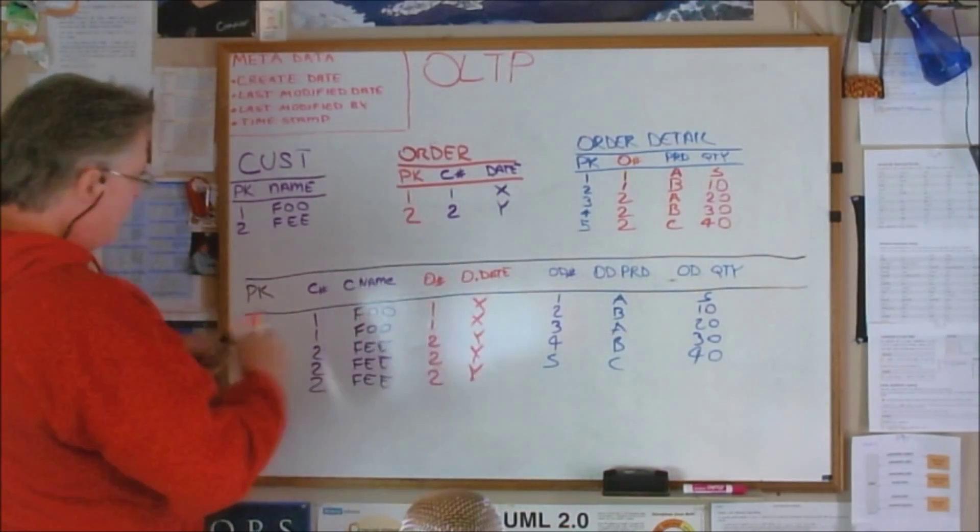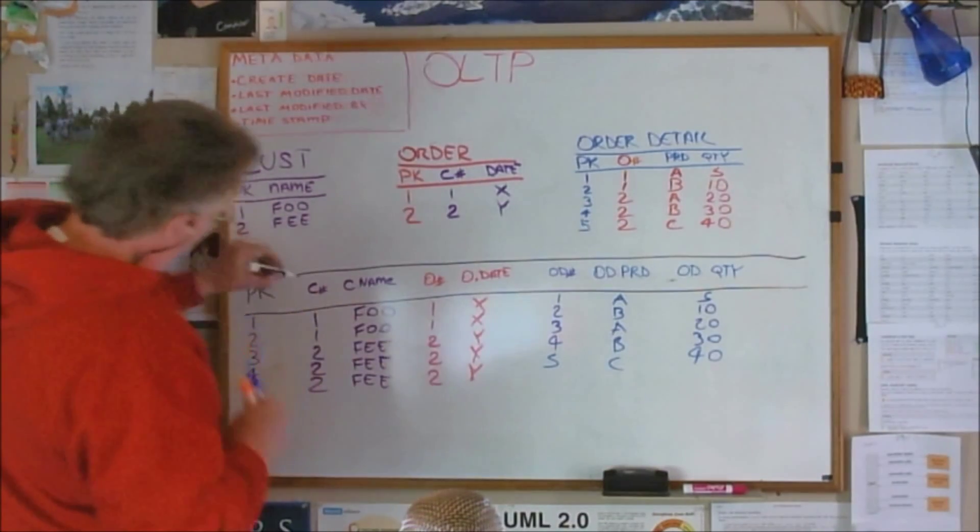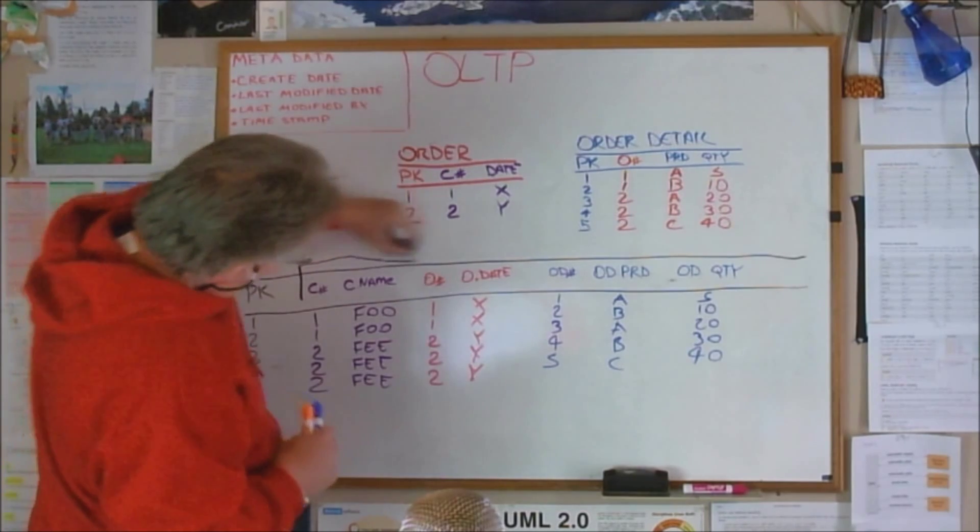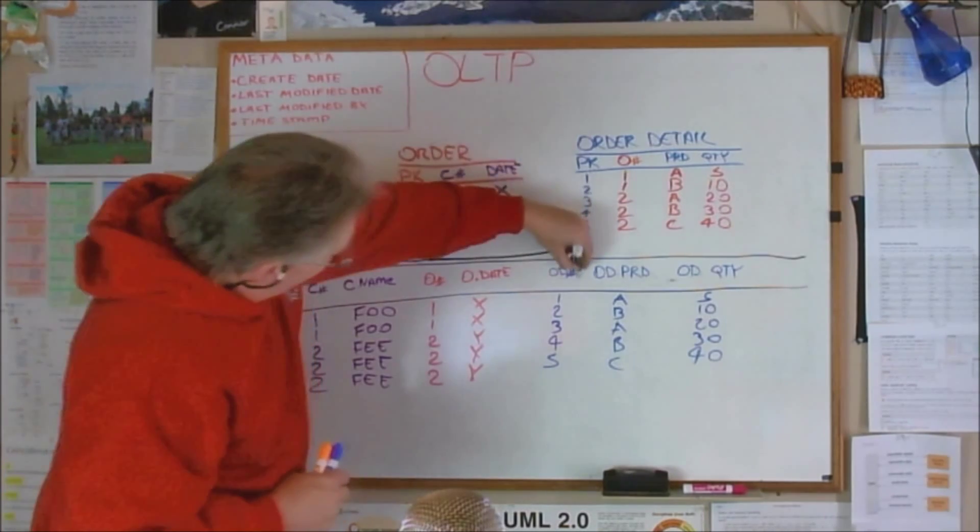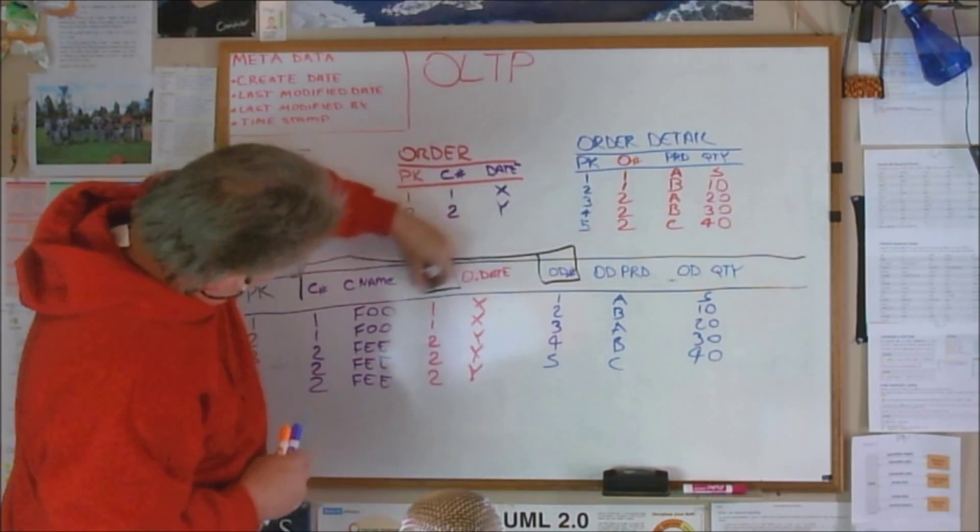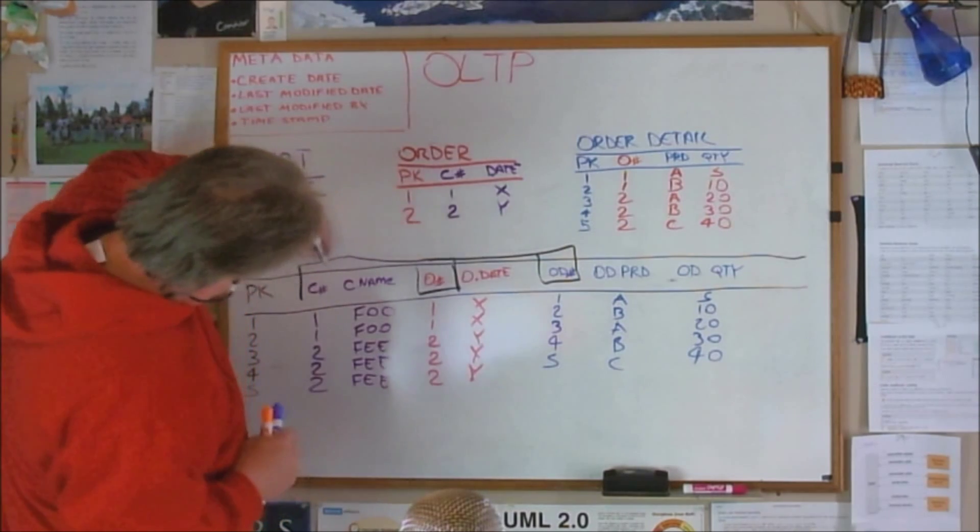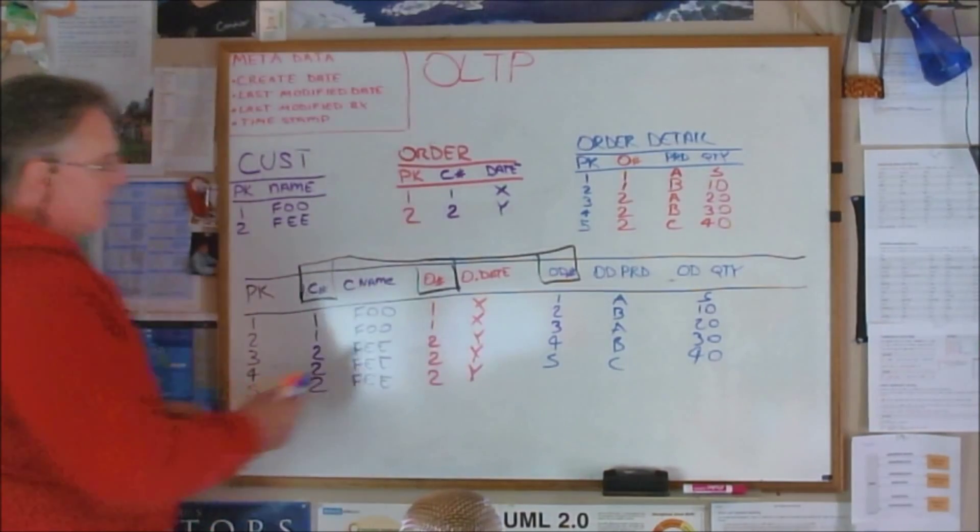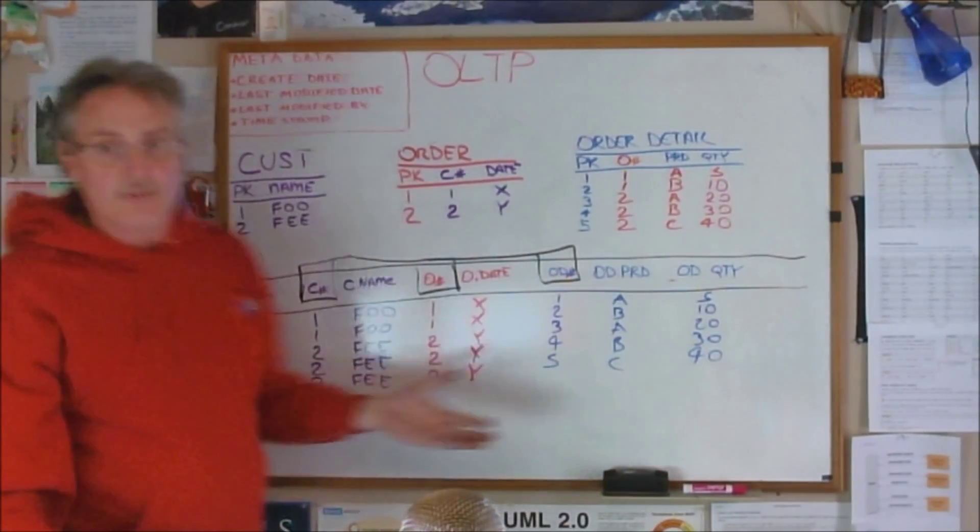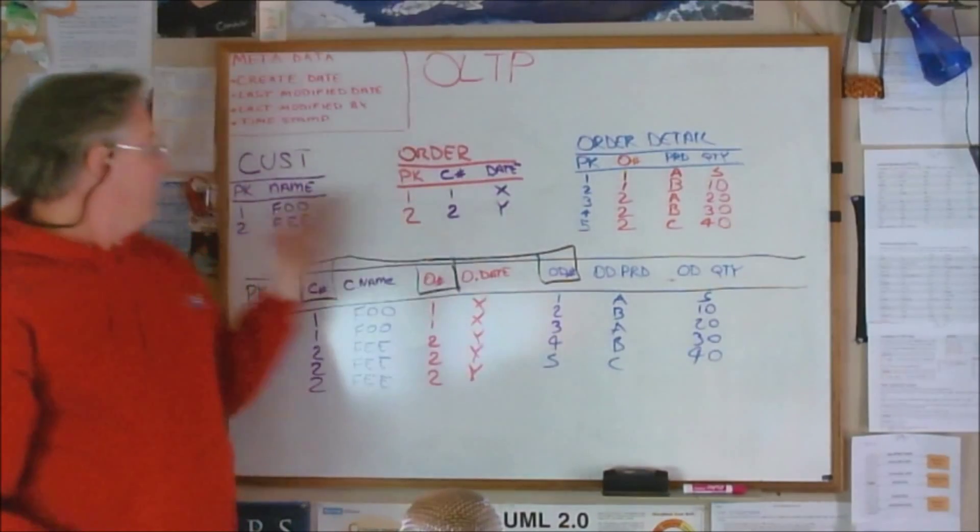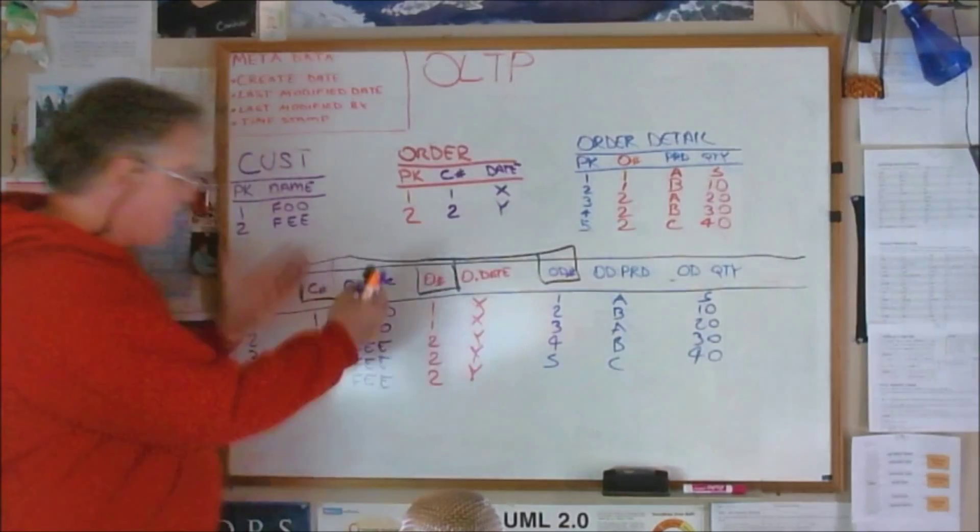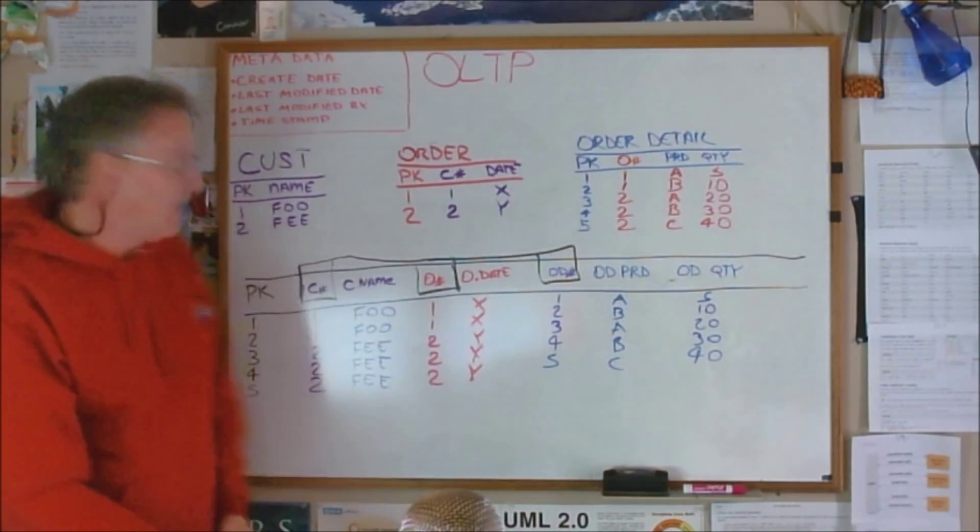So now when you want to update something, this is actually... let's see, customer number, order number, right there. Those guys, that one, that one, and that one, those are your composite keys. And this is a very simplistic example, ladies and gentlemen. Could you imagine if you had one order that had a thousand items? This table would just be huge with redundant data.